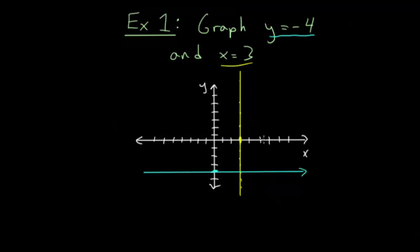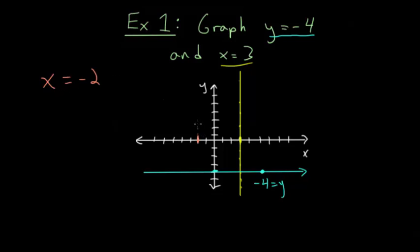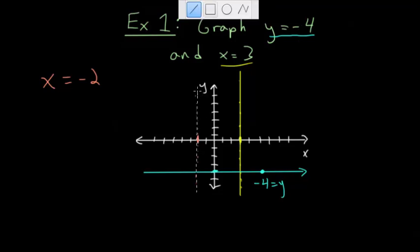For example, the point five comma negative four lies on the line y equals negative four, and that's true of every point on that line. Similarly, if we had x equals negative two, we find that x value on the coordinate plane and every point on that line has the exact same x value. All points go above and below since they share the same x value, and we draw in our vertical line.